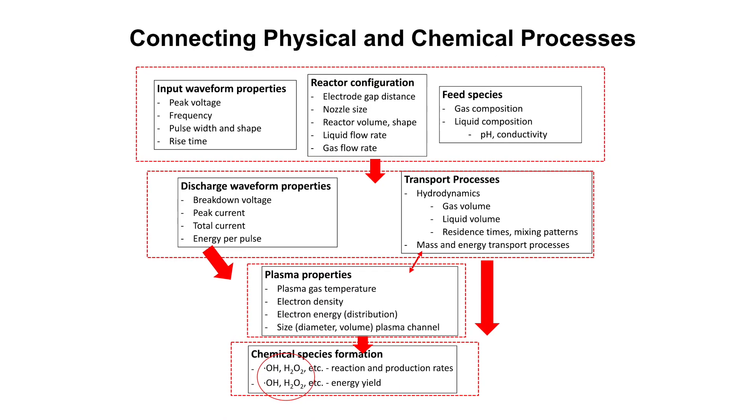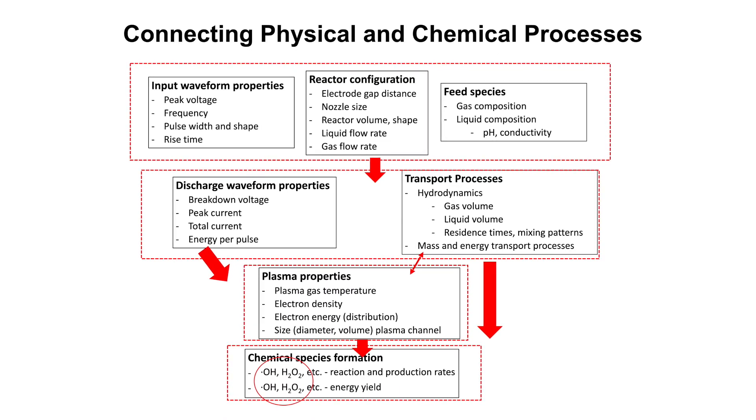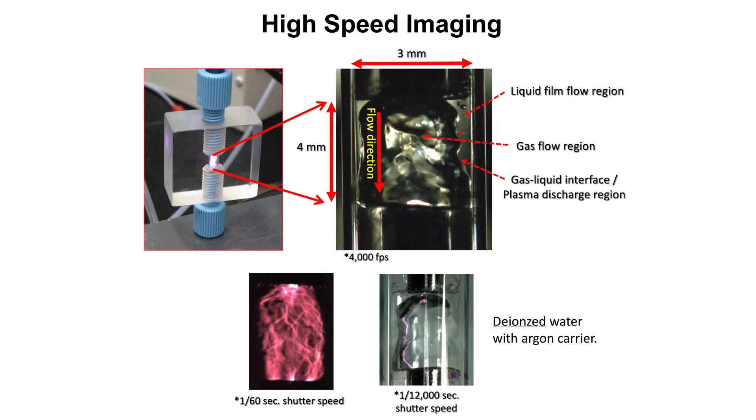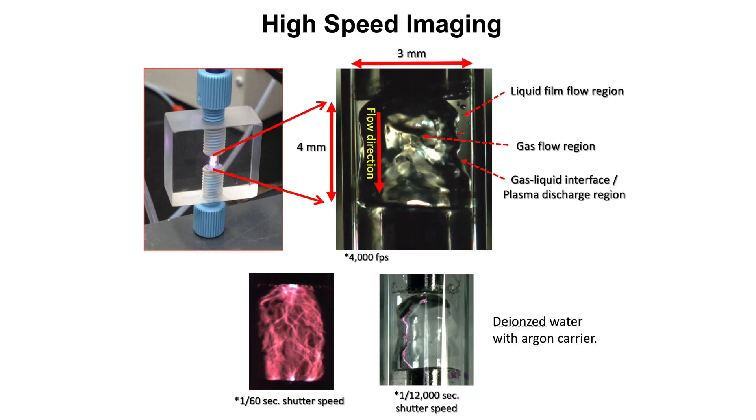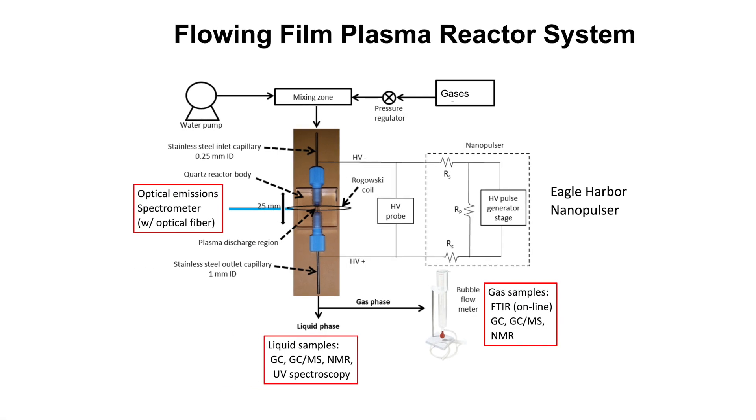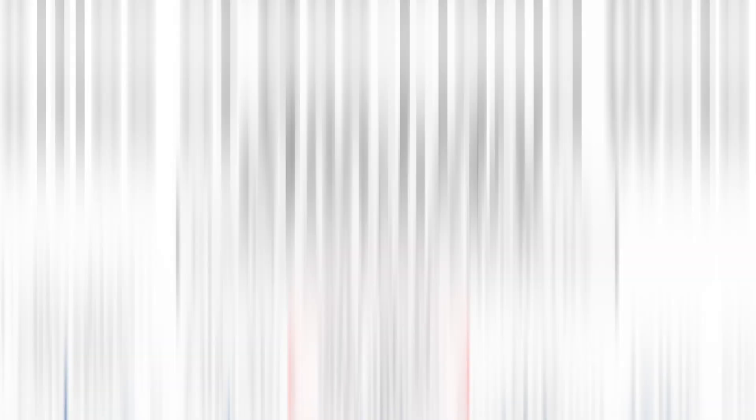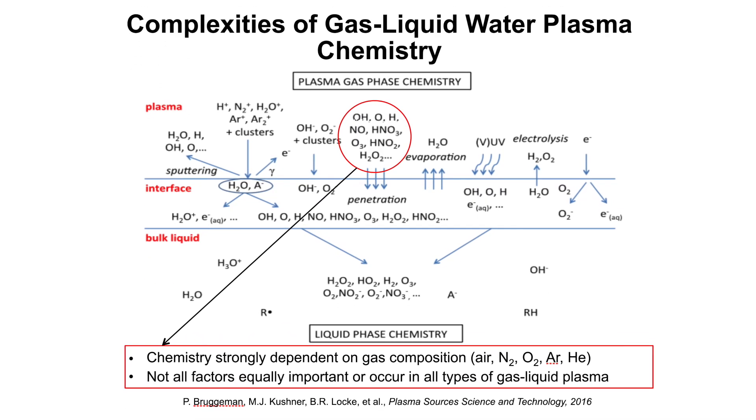When a plasma contacts water, there are a lot of physical and chemical processes that occur. It's a very complicated system, but ultimately depends upon the environment. So if you have a gas that contains nitrogen and oxygen, then you can produce nitrogen oxides.